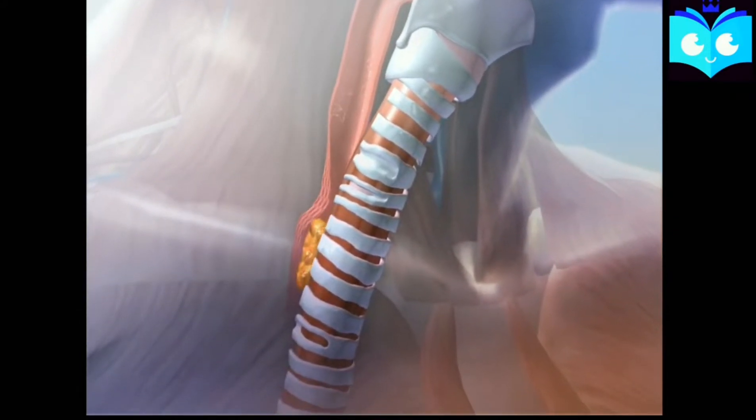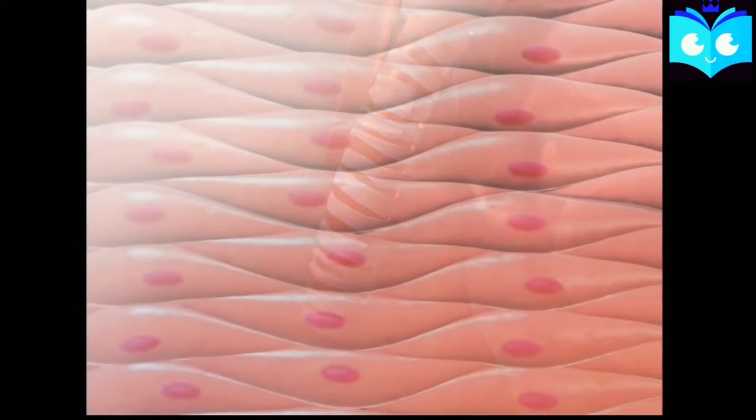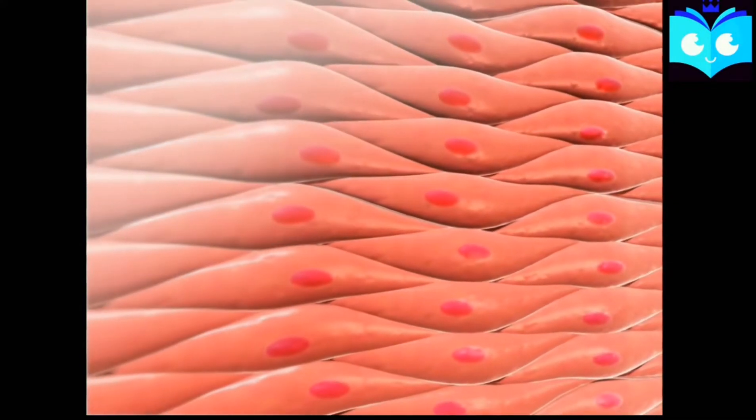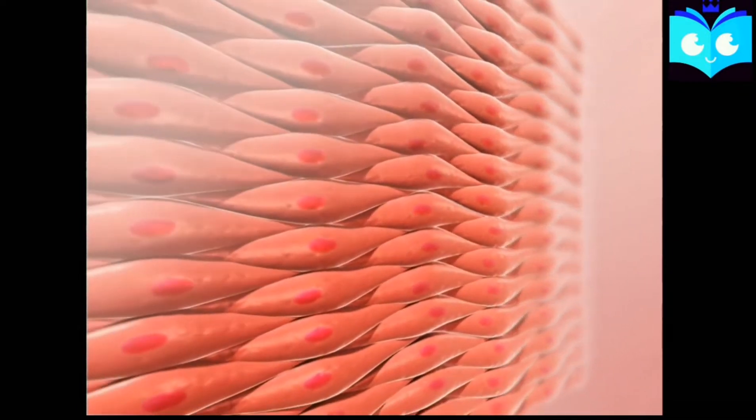If we talk about the types of muscles, there are three main types: first, skeletal muscles; second, smooth muscles; and the third one, which is only present in the heart, is cardiac muscles.